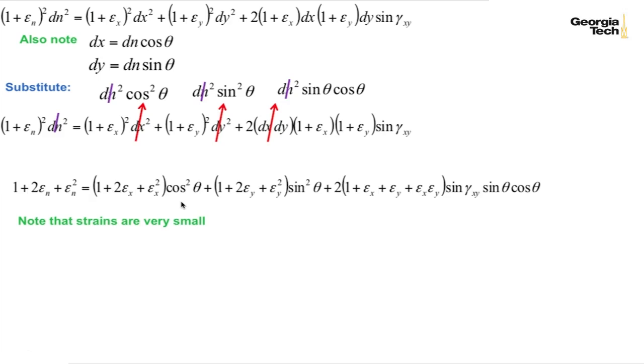Another observation we can make is that the strains are very small. And so whenever we square the strains, they're going to be much less than the strain itself, and so we can neglect those terms. Also we can say for small strains, small shear strains, that sine of gamma is approximately equal to gamma. And so here's a strain term squared that we'll neglect.